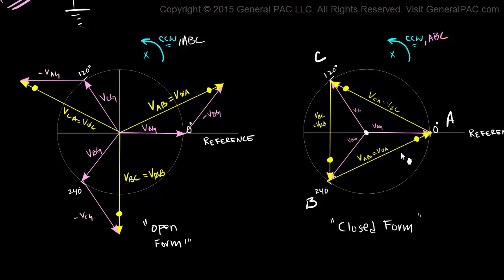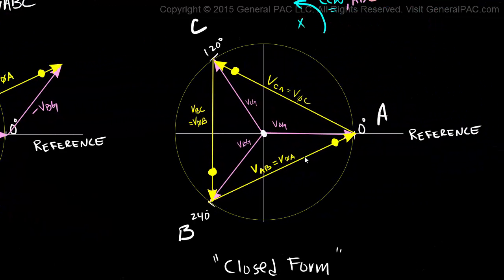We've defined this phasor here as V Phase A, and we said that the dotted side is the polarity side of V Phase A. Now look at what the polarity side of V Phase A is connected to: it's connected to the non-polarity side of V Phase C. Then the polarity side of V Phase C is connected to the non-polarity side of V Phase B. And the polarity side of V Phase B is connected to the non-polarity side of V Phase A.